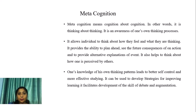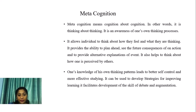Metacognition means cognition about cognition — in other words, it is thinking about thinking. It is an awareness of one's own thinking processes. It allows individuals to think about how they feel and what they are thinking. It provides the ability to plan ahead, see the future consequences of an action, and provide alternative explanations of events. It also helps one think about how one is perceived by others, leading to better self-control and more effective study strategies.